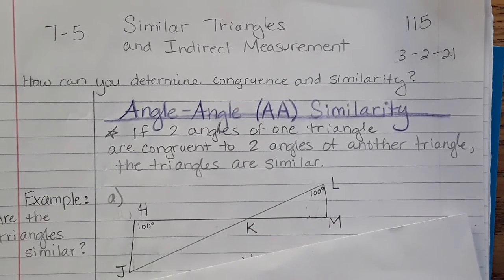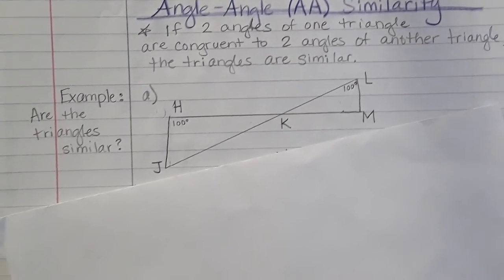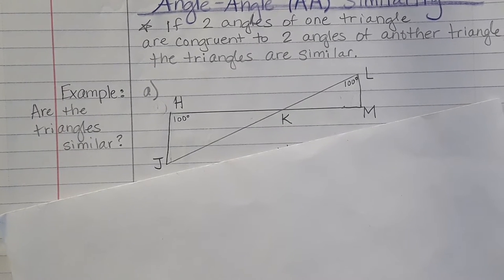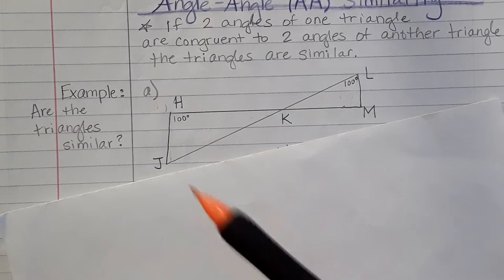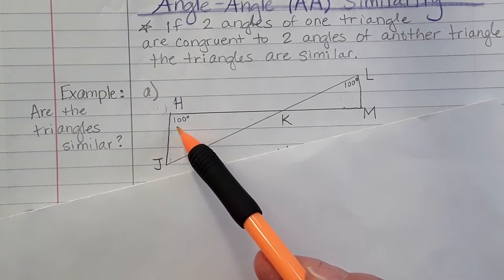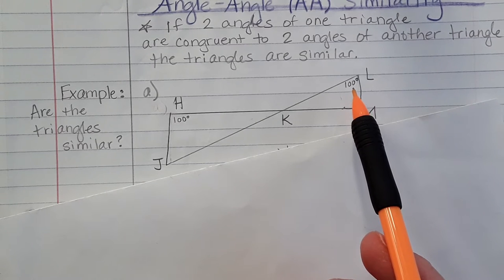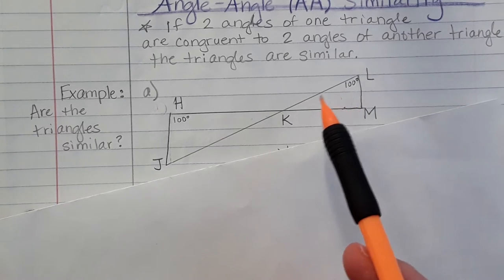So here is an example. We're asking if these triangles are similar. Well, I can see that angle H is 100 degrees and angle L is 100 degrees, but that's only one angle. Where is my second angle that's congruent?